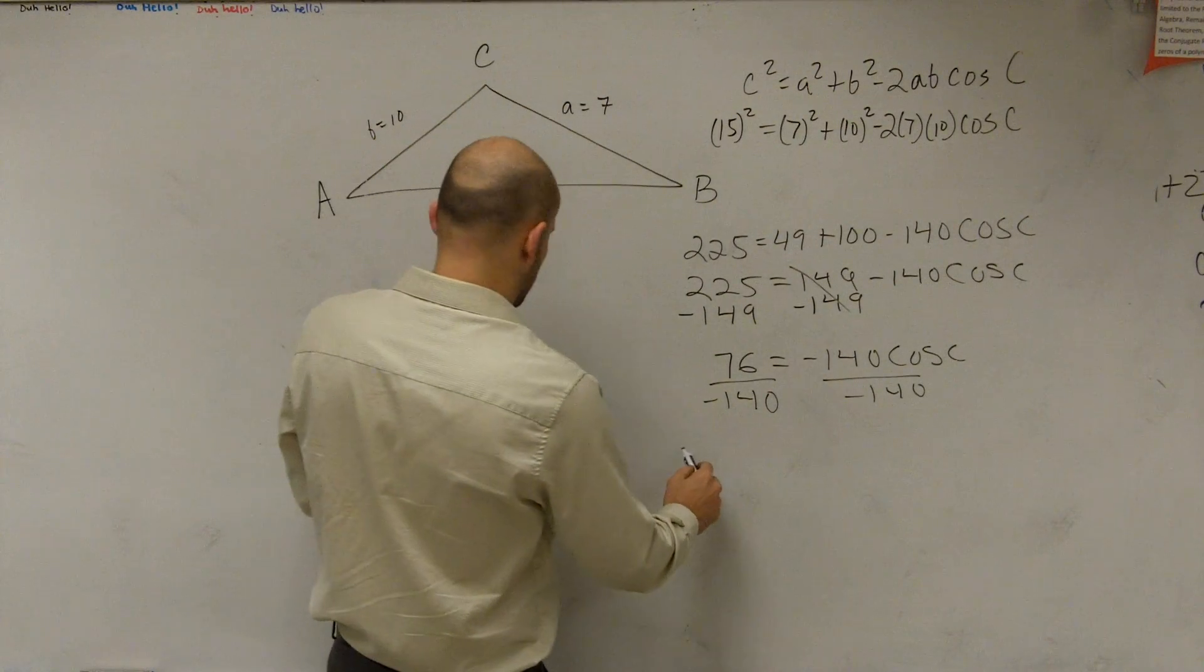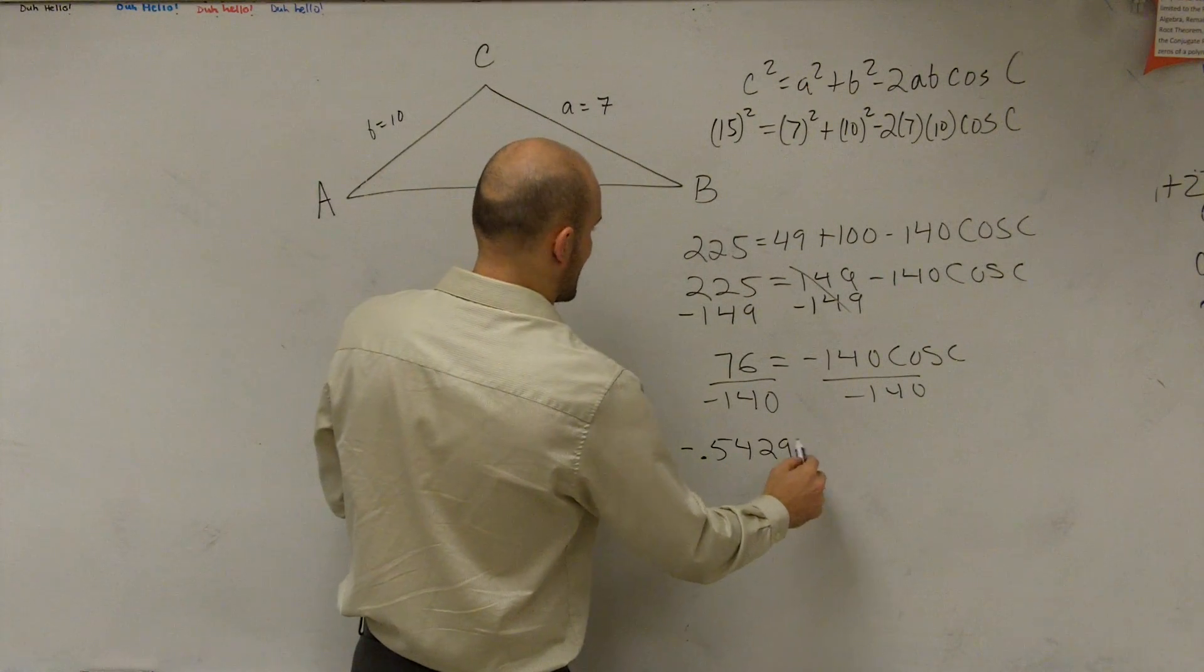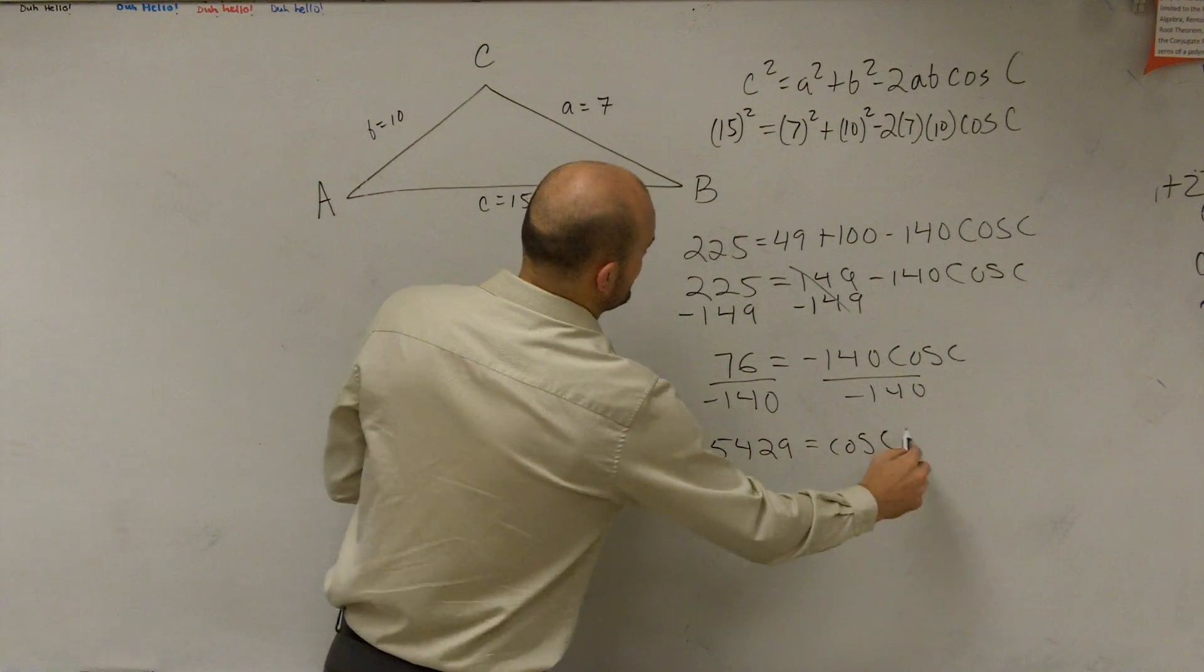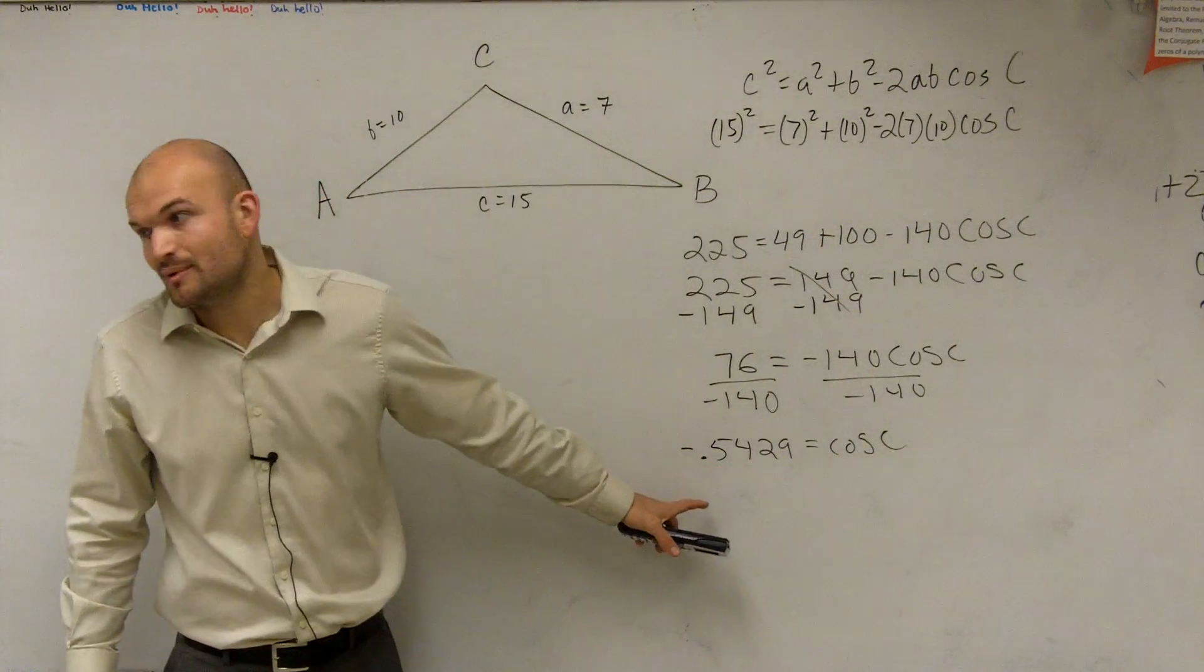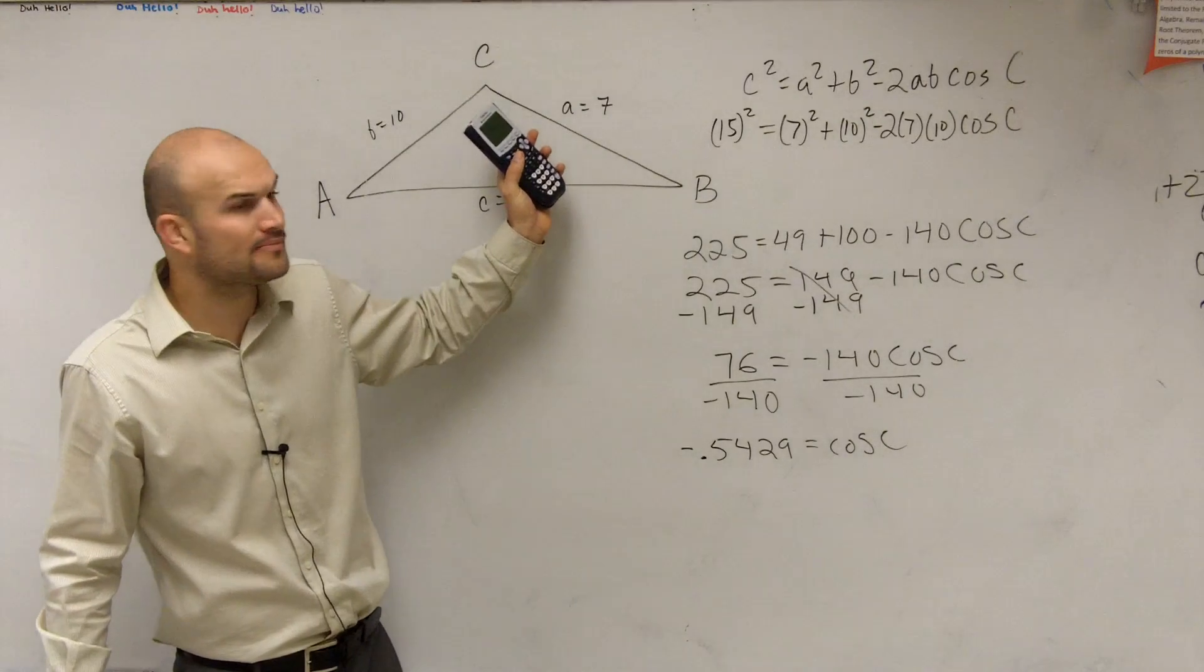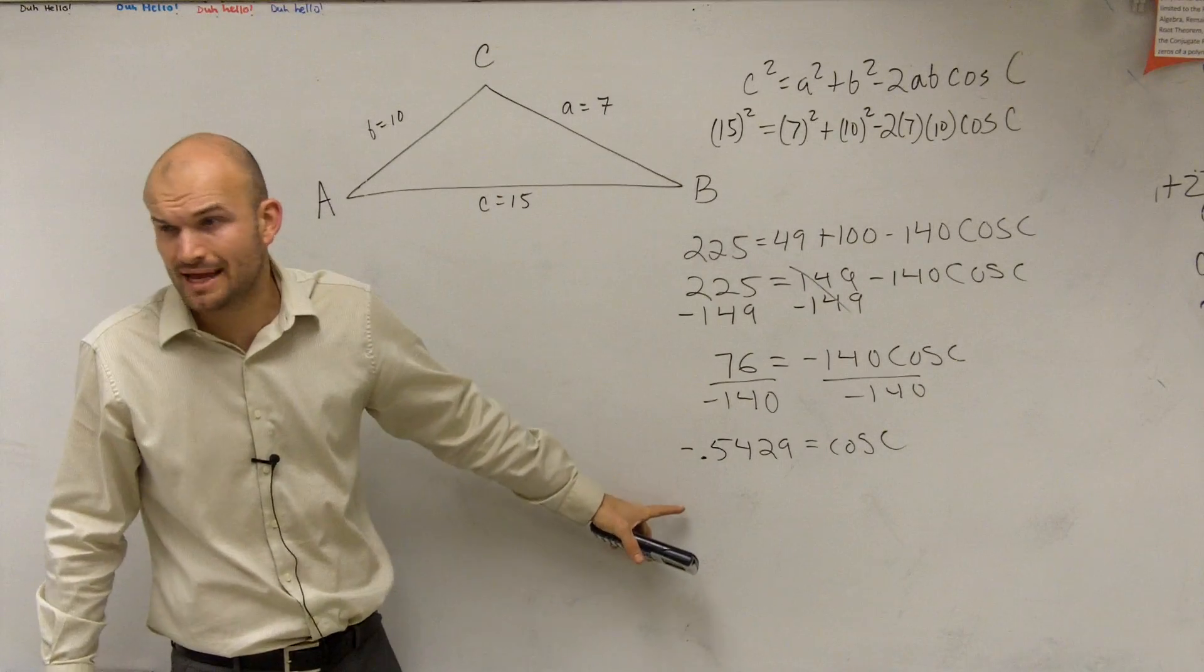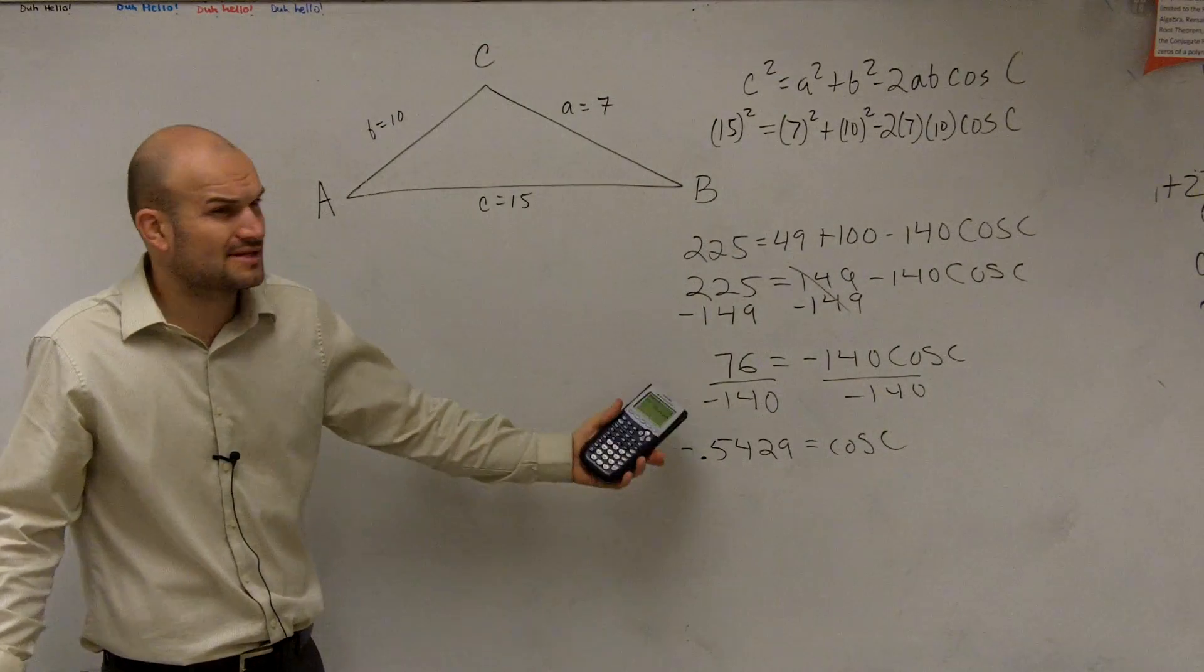So therefore, I'm going to have negative 0.5429 equals the cosine of c. But remember, we're trying to find the angle c. This is going to be way too small of an angle if we're looking into, as far as this graph. That's a really, really small, cute angle, right? We said it has to be the smallest angle, or the largest angle. So that's not going to make sense.